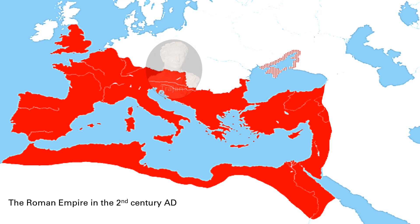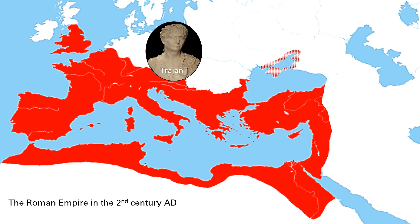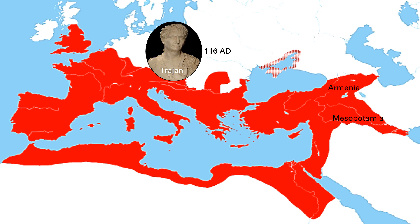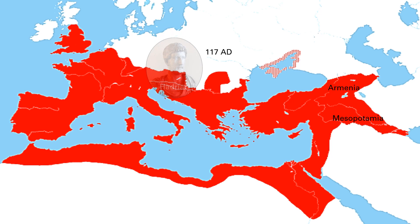Let's begin with politics. At the turn of the second century, Emperor Trajan was presiding over a huge empire, the largest it had ever been. Rome controlled the Mediterranean, Europe's Atlantic coast, and most of Europe itself. In 106, Trajan conquered the Kingdom of Dacia, mostly in modern Transylvania, extending the frontier north of the Danube for the first time. Ten years later, he extended the empire past the Euphrates, defeating the Parthian Empire and conquering both Armenia and Mesopotamia, stretching Rome's borders to the Caspian Sea and the Persian Gulf.